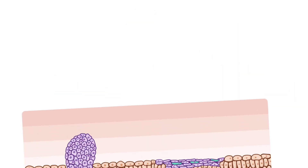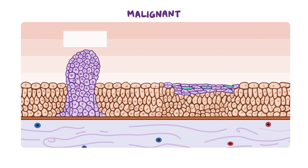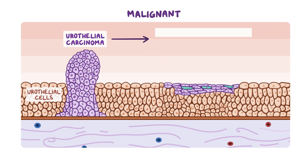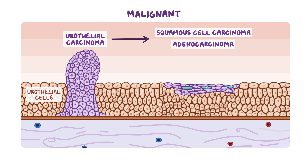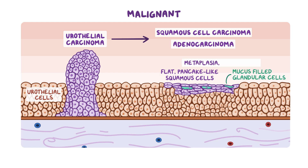The most common malignant bladder tumor is urothelial carcinoma, which arises from a urothelial cell, followed by squamous cell carcinoma and adenocarcinoma — both of which also develop from urothelial cells. Chronic inflammation or irritation can cause urothelial cells to change shape, taking on the flat, pancake-like appearance of squamous cells or the mucus-filled glandular cell appearance. This process is called metaplasia and is still benign at that stage.